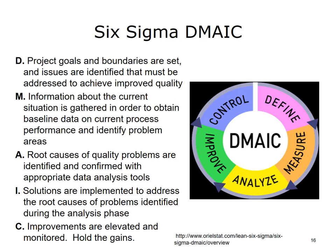Six Sigma was developed by Hewlett-Packard, Motorola, and GE and comes directly from quality thinking in the 1930s. It combines established methods such as statistical process control, design of experiments, and failure mode and effects analysis in an overall framework with the primary aim of reducing variation in the process. Six Sigma aims to reduce variation through five clearly defined steps: Define, Measure, Analyze, Improve, and Control.